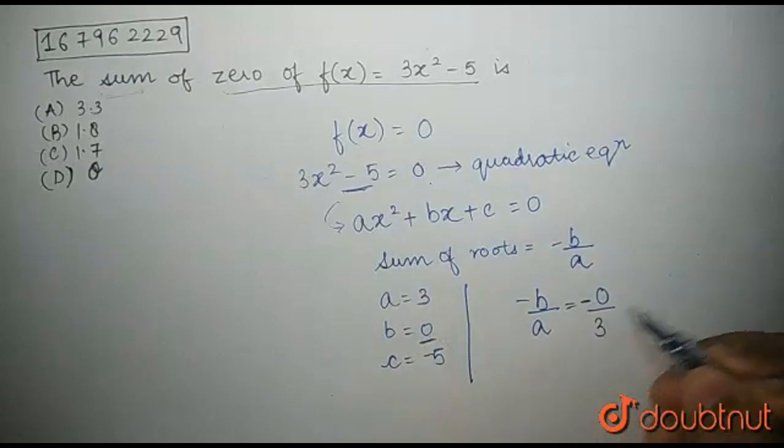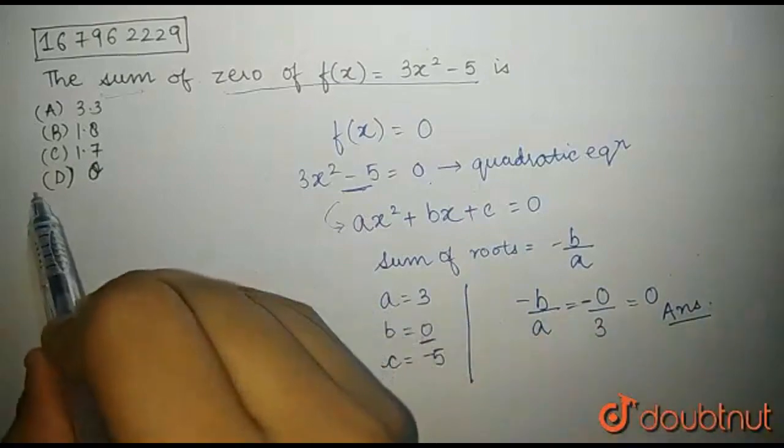But since b is equal to 0, therefore, our answer is 0, which is given in the D part.